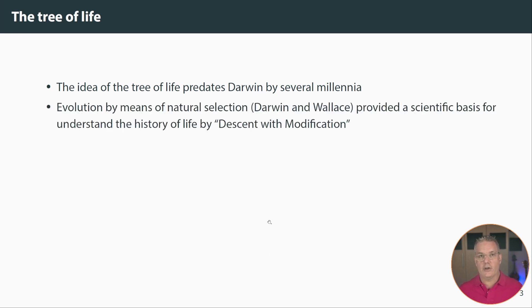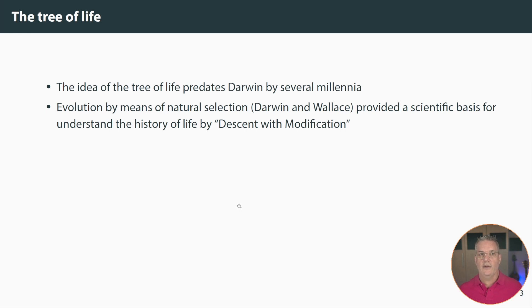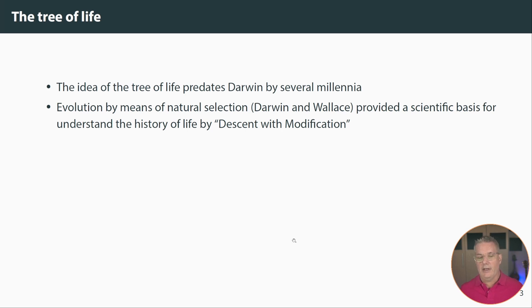But what is Darwin's and Wallace's was the identification of evolution by means of natural selection. This provided a scientific basis to understand how life evolved — one that could be tested, explored, experimented with, and used to derive models. Sometimes Darwin referred to it as descent with modification.